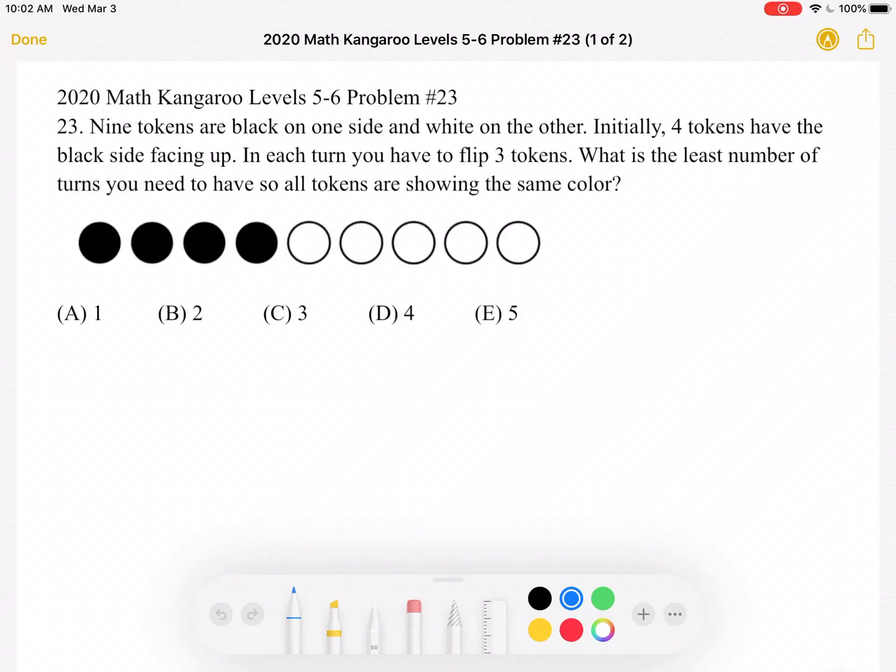This is the 2020 Math Kangaroo Levels 5-6, problem number 23. Nine tokens are black on one side and white on the other. Initially, four tokens have the black side facing up. In each turn, you have to flip three tokens. What is the least number of turns you need to have so all tokens are showing the same color?